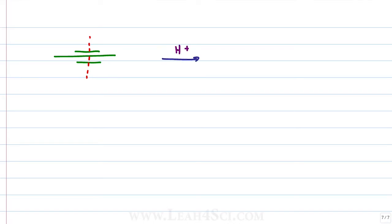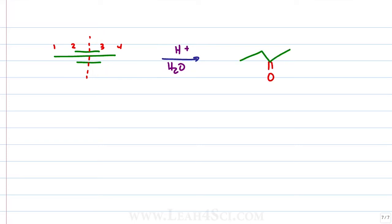We just worked through the mechanism for an internal symmetrical alkyne. If there is symmetry, it doesn't matter where I place the enol and ultimately the ketone. If I number this from the left — 1, 2, 3, 4 — then I'll put the ketone on C2 or C3. But if I put the ketone on C3, notice that I can just turn around and number it from the right, putting the ketone again on carbon 2.